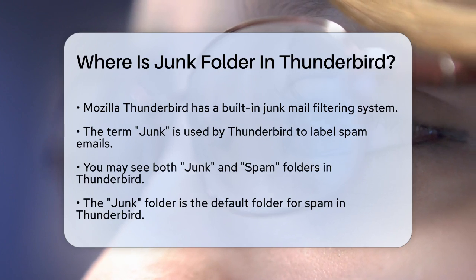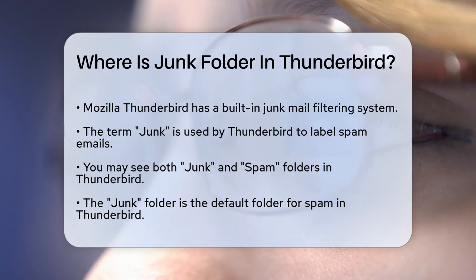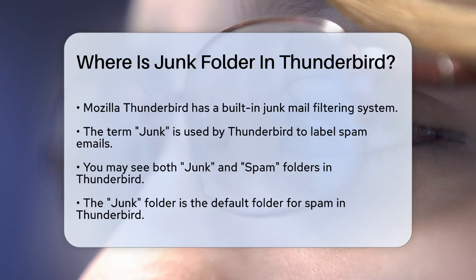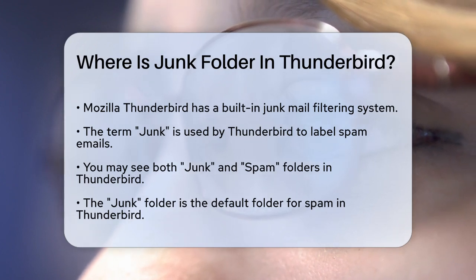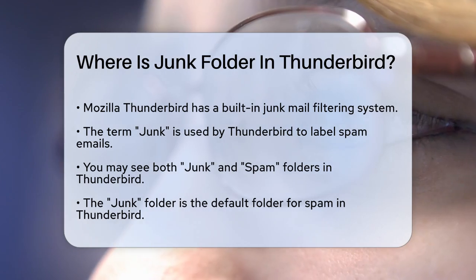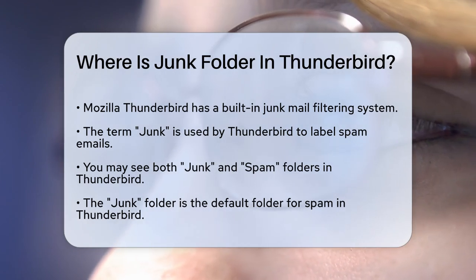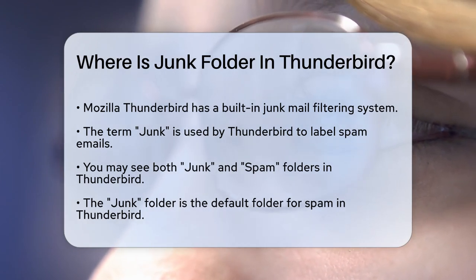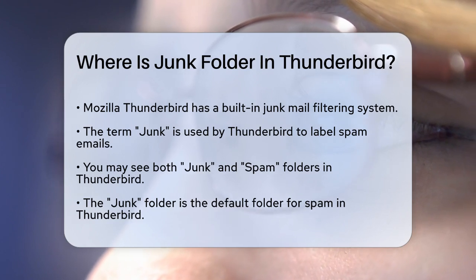Thunderbird has a built-in junk mail filtering system that helps keep your inbox clean. The term junk is what Thunderbird uses internally to label spam emails. You might notice that sometimes you have both junk and spam folders, but the junk folder is the one Thunderbird uses by default.